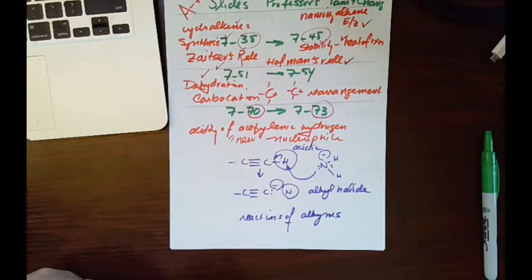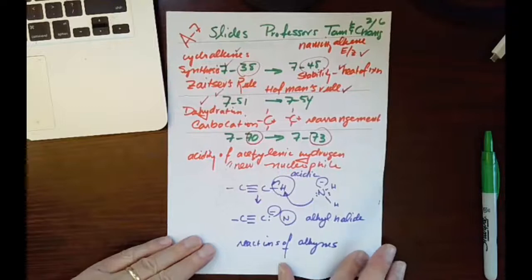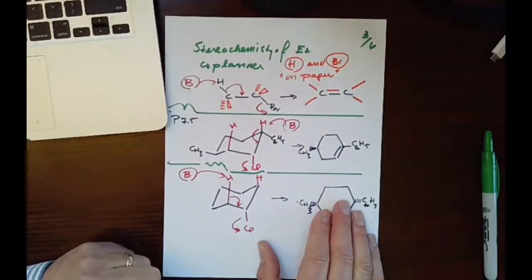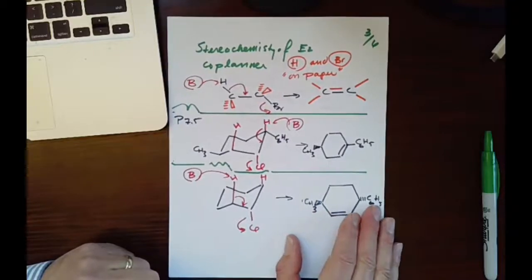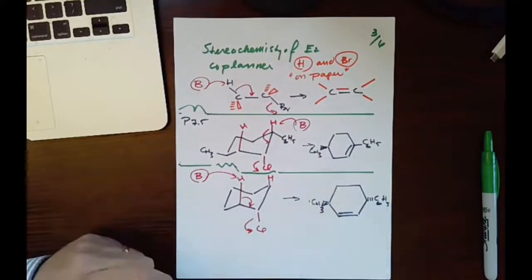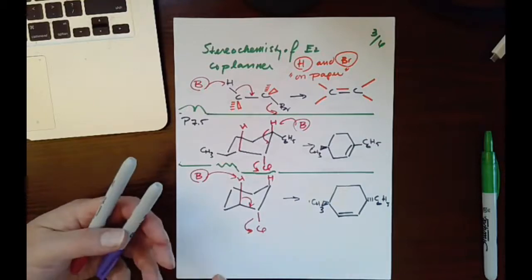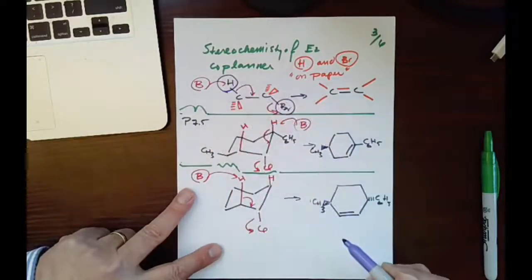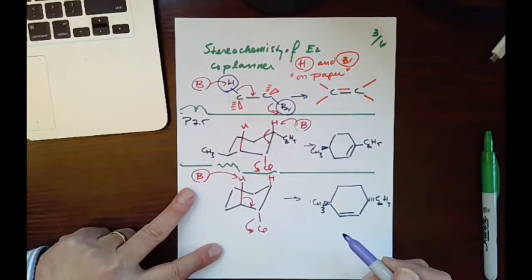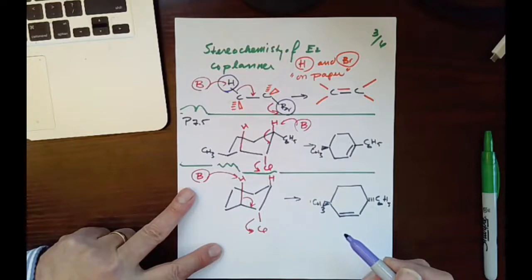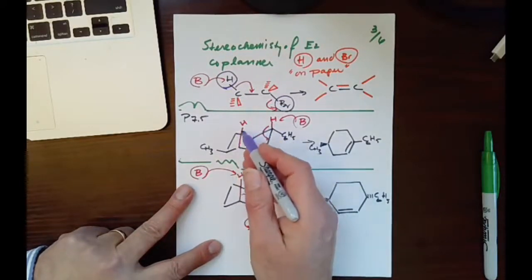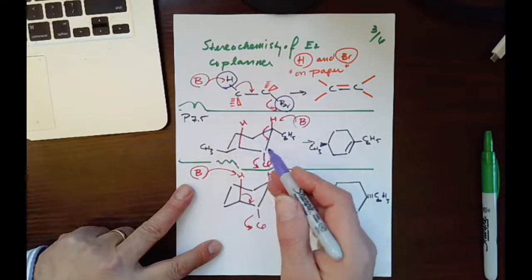So that's my slide number two. The slide number three that I made is again stereochemistry of E2. We talked about that on Monday. We said that Br, which is the leaving group in this case, and H, which is the acidic hydrogen, they have to be on the same plane. Example of this is chair structure of this cyclohexane.